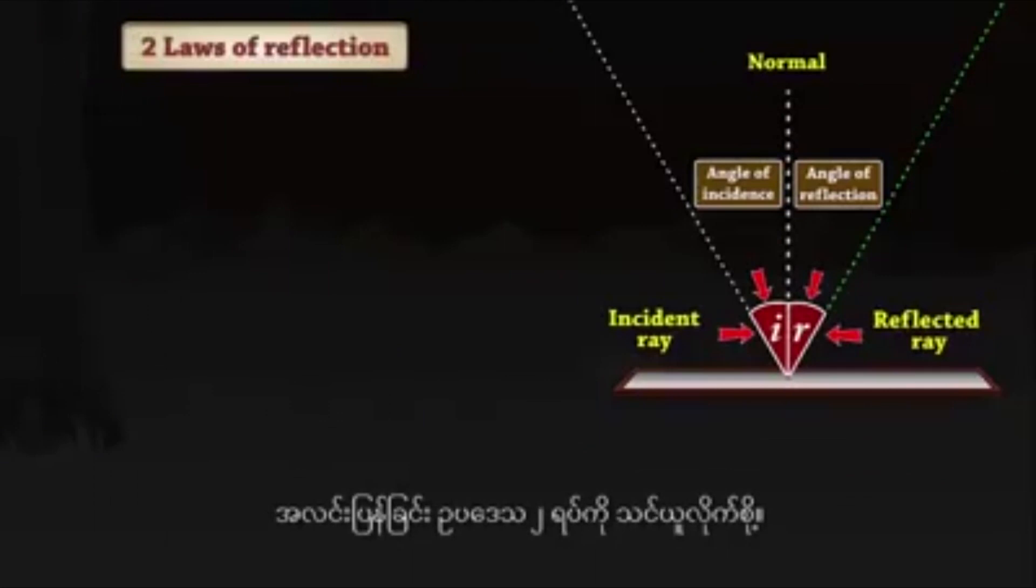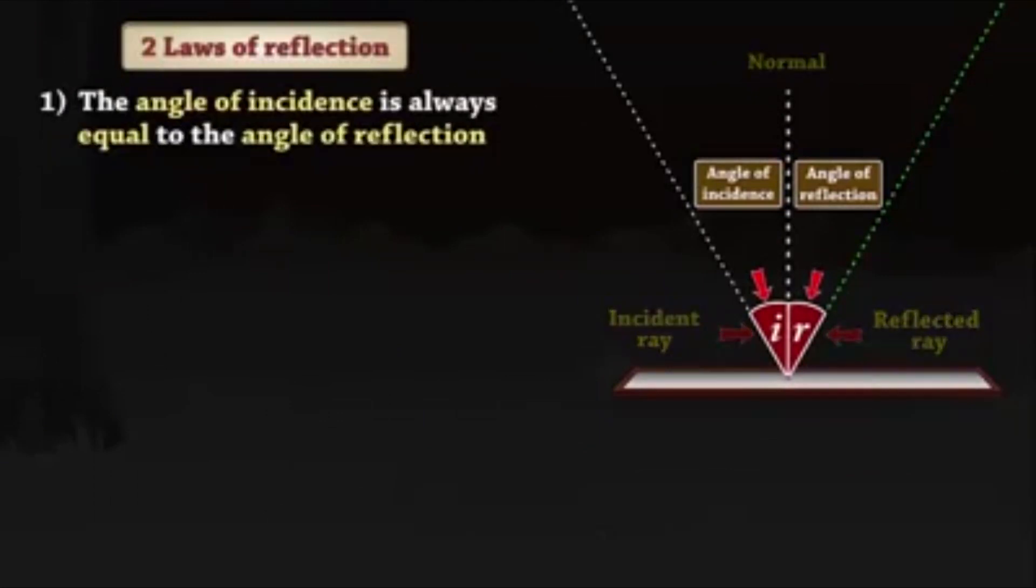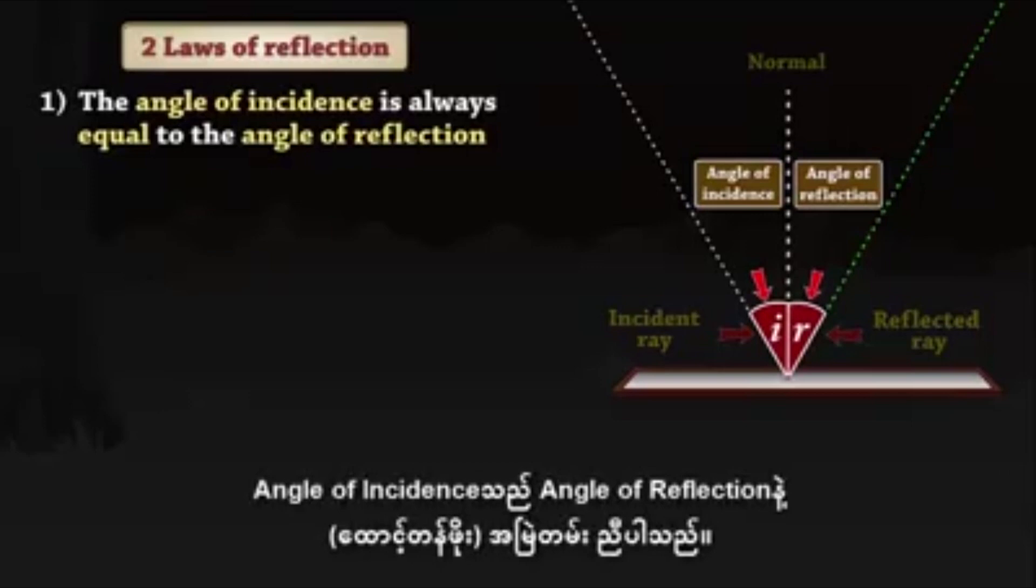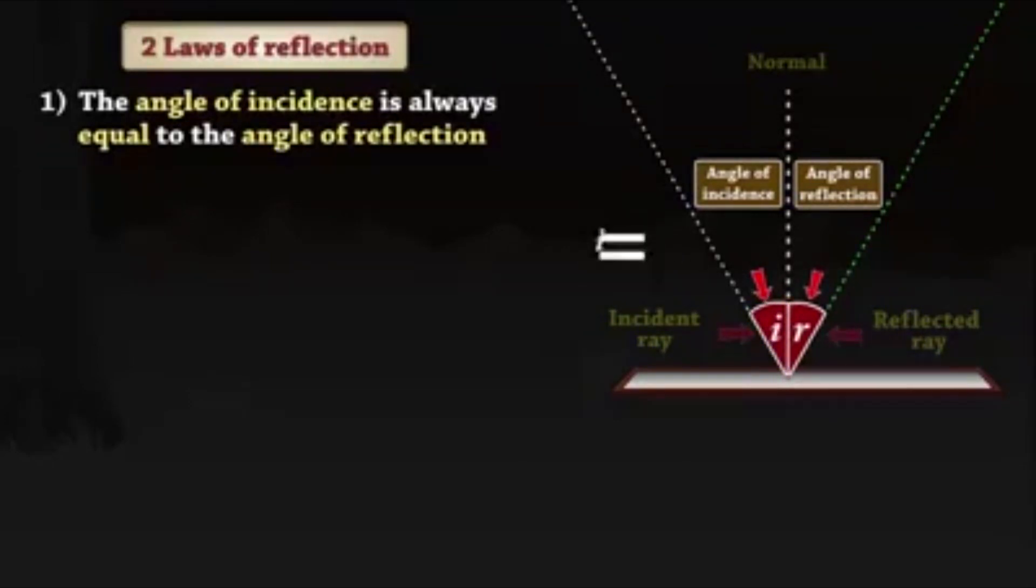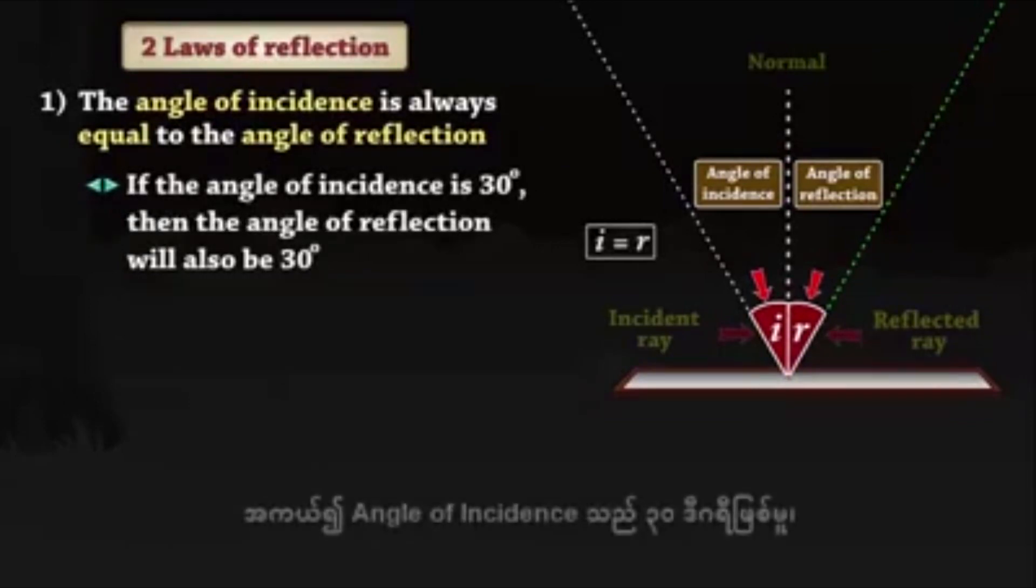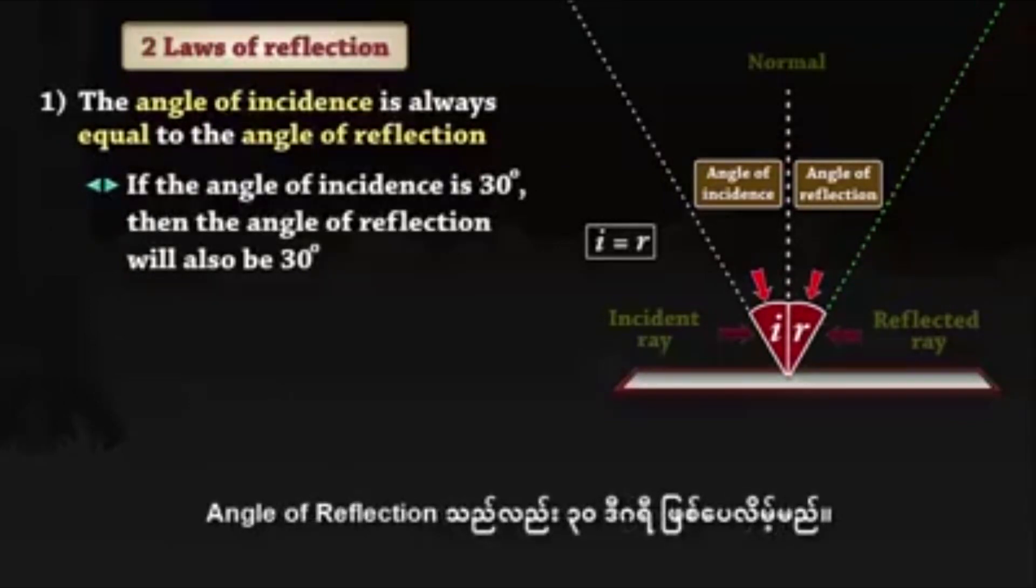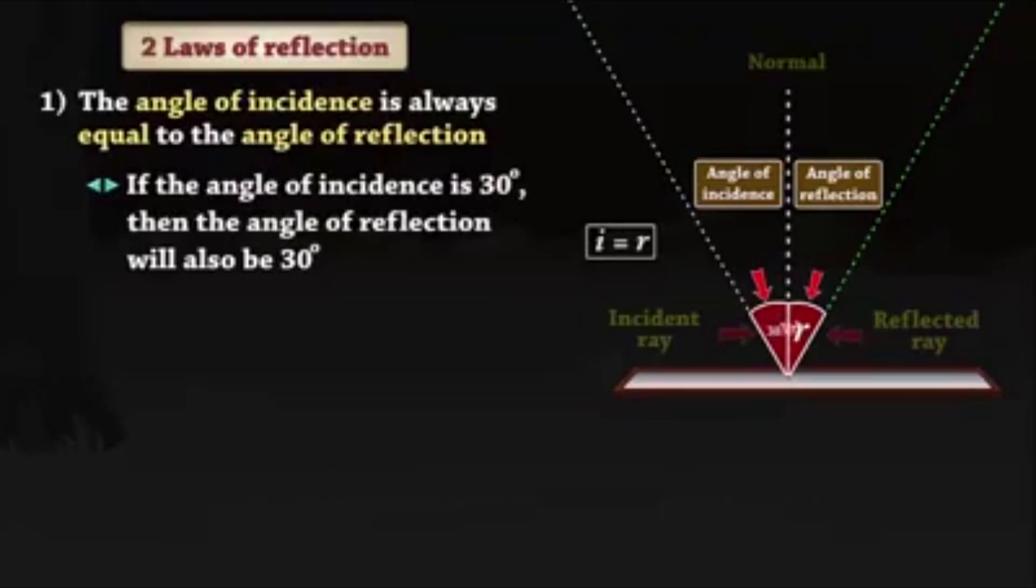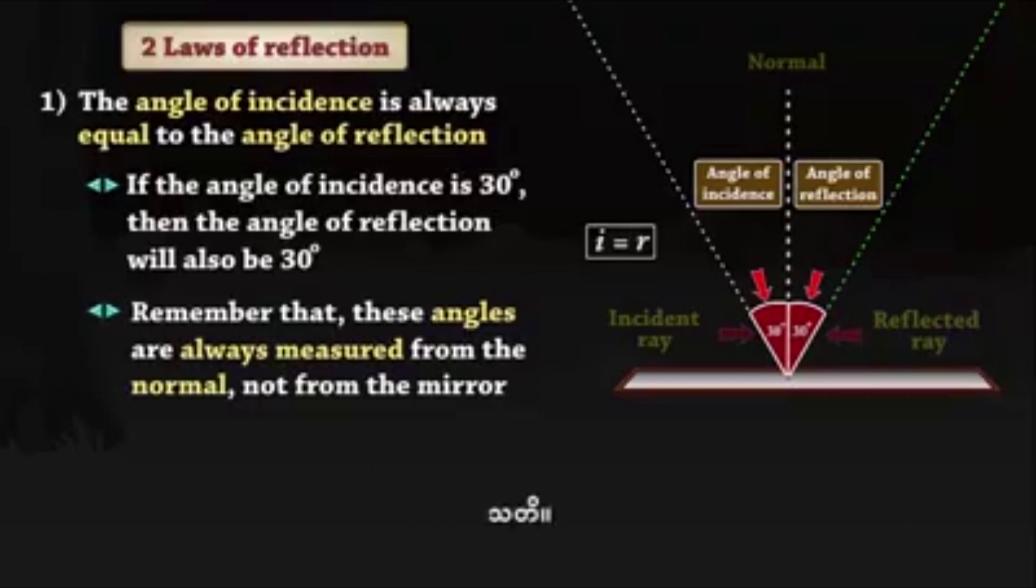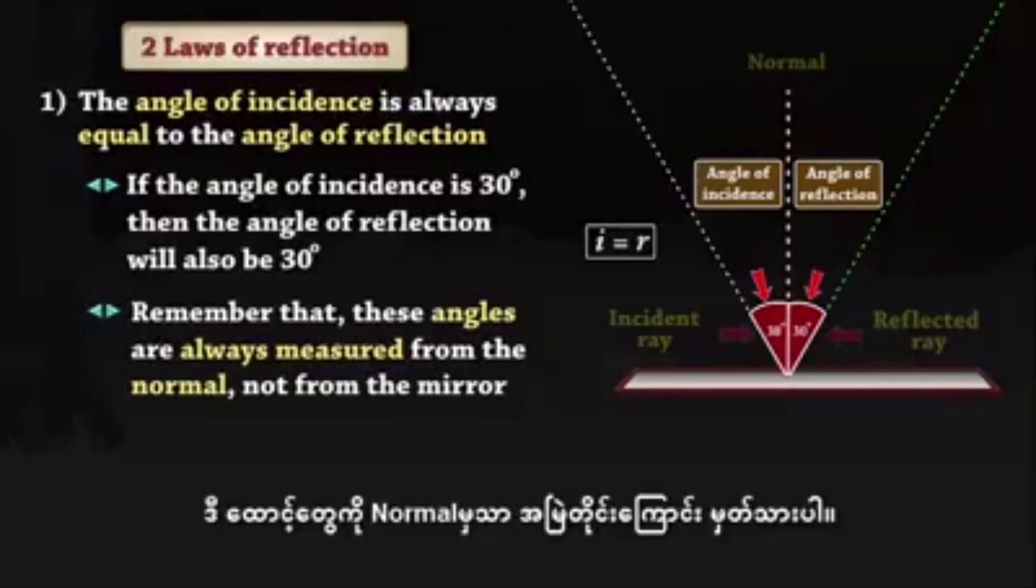Let us learn the two laws of reflection. The angle of incidence is always equal to the angle of reflection. If the angle of incidence is 30 degrees, then the angle of reflection will also be 30 degrees. Remember that these angles are always measured from the normal, not from the mirror.